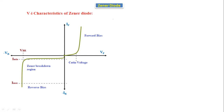Now let's see the combined V-I characteristics of the Zener diode. In forward bias, up to the cut-in voltage there is no conduction; after reaching that point it starts conducting — same as a PN junction diode. In the reverse bias, a very small leakage current flows; after reaching the reverse breakdown voltage VBR, the current increases drastically. This region is called the reverse breakdown region, and this voltage VBR is constant.